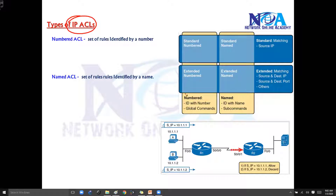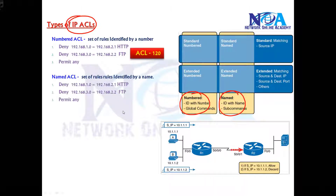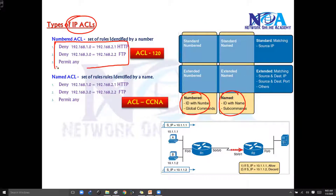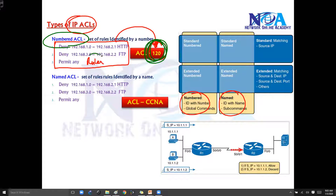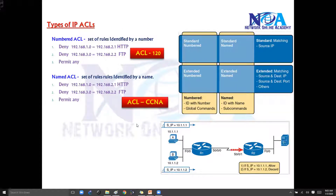We have something called numbered ACLs or named ACLs. These are the rules we define — it can be 2, 3, 10, 20, any number of rules. All these rules can be identified with some number, like 120. If you are identifying with a number then we call it a numbered ACL. If the same rules are identified with a name, then we call it a named ACL. So numbered ACL means the rules are identified with a number, whereas in named ACLs the rules are identified with a name.